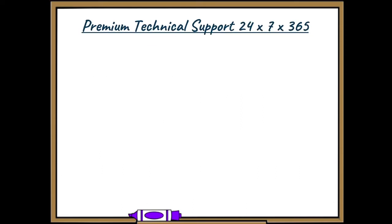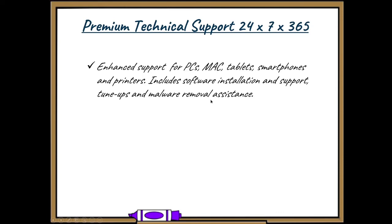Next up, Premium Technical Support 24/7, 365. It provides enhanced support for PCs, Macs, tablets, smartphones, and printers. Includes software installation and support, tune-ups and malware removal assistance. For example, if a customer's computer is running slow, they can call or chat with our Premium Technical Support, and advisors can assist with cleaning up files and speeding up their computer. Or if they get a virus or malware on their machine, they can assist with that as well. Also includes post-installation support of connected devices to ensure they can access the Internet, such as a Nest, a Ring, a smart TV and smart appliances.